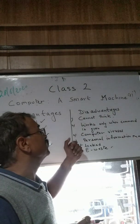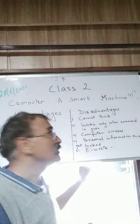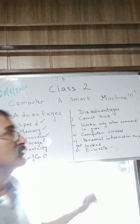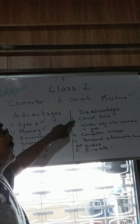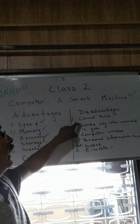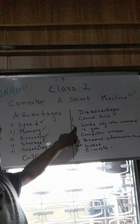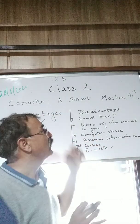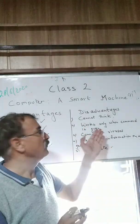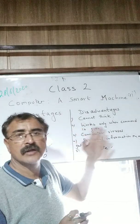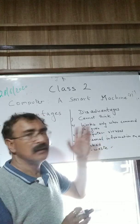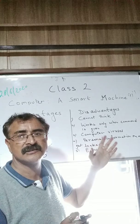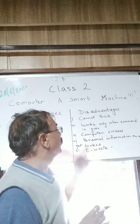Now because it is a machine, there are certain disadvantages also. The first disadvantage is that it cannot think — because it is a machine, it has no reasoning power. It works only when a command is given. It works according to whatever command you give, following instructions and commands strictly.